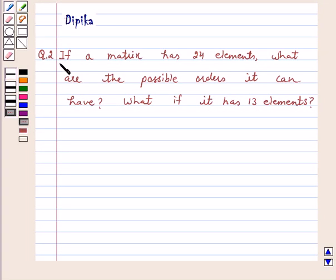Let's discuss a question. If a matrix has 24 elements, what are the possible orders it can have? What if it has 13 elements?